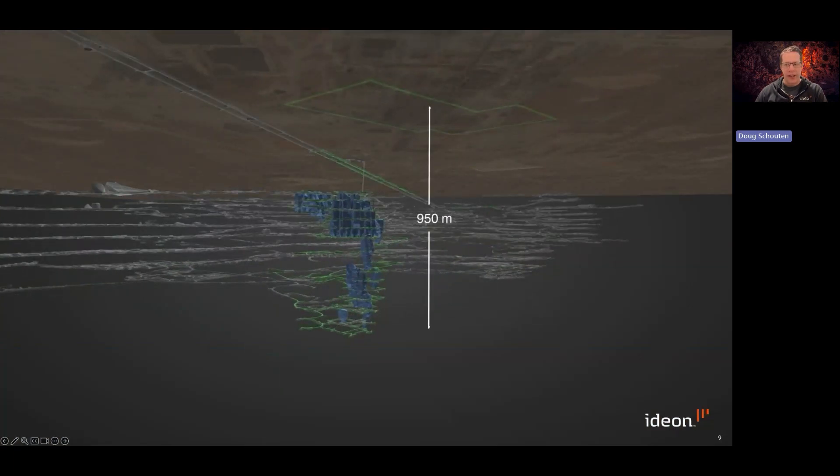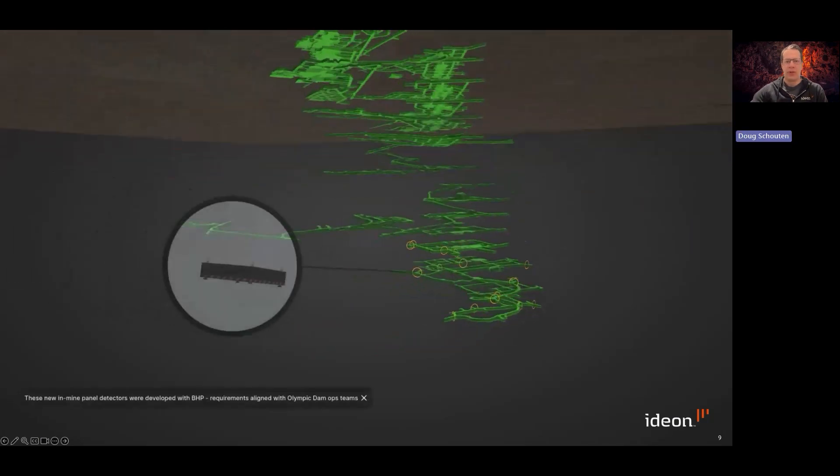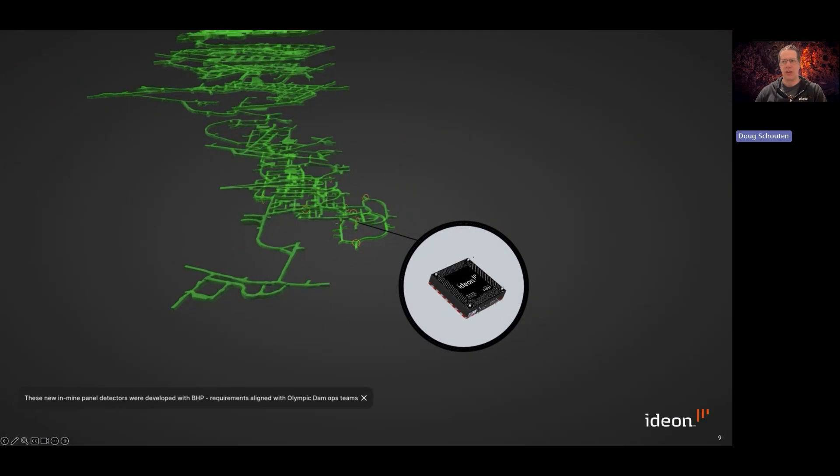So Think and Act Differently powered by BHP and Ideon worked together to activate a muon survey in the Greens. This survey extended down almost one kilometer in the area of busy active mining. You can see a number of backfilled stopes from previous and ongoing mining activity.